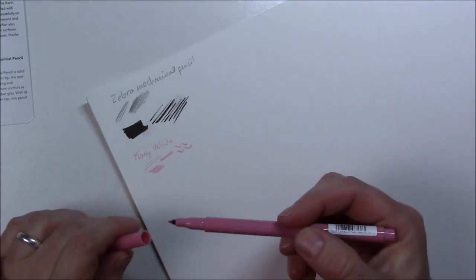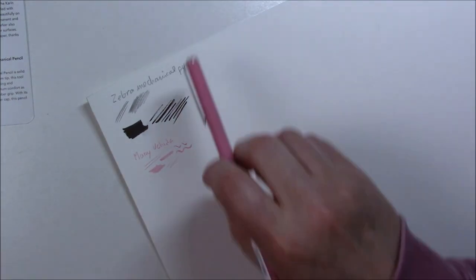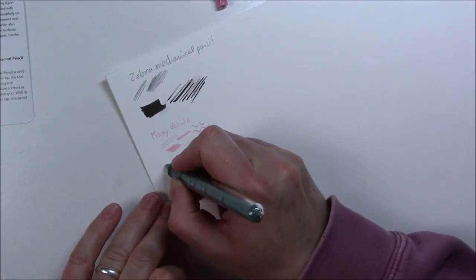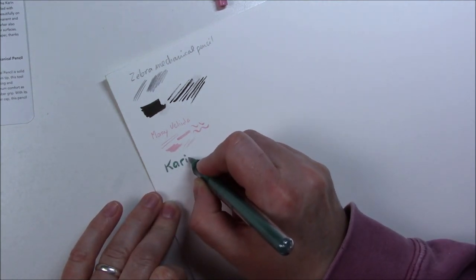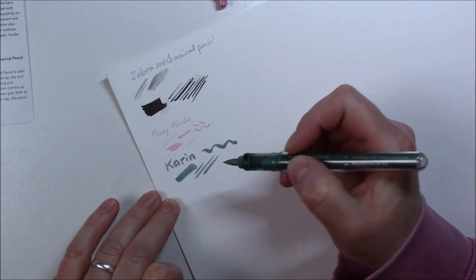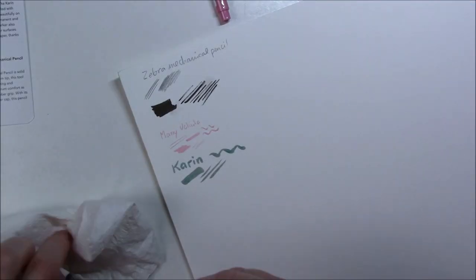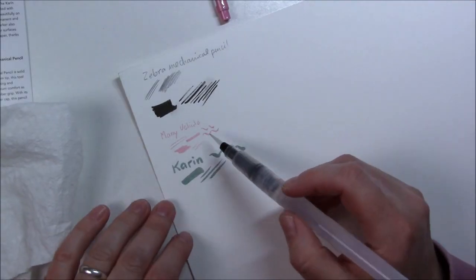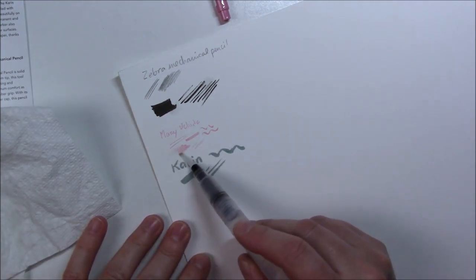The Kuretake marker is really nice, the brush is lovely, but the color kind of disappears or maybe I don't know if it sinks into the paper or something. So it kind of makes it dull, again I don't know if it's because of the paper, but the brush is really really nice and squishy.